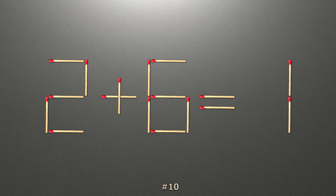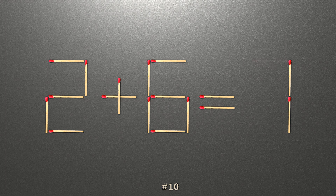To do this, all we need to do is move this match right here. Now when we check the condition, 2 plus 5 is 7, and 7 equals 7. Now our equality is correct.